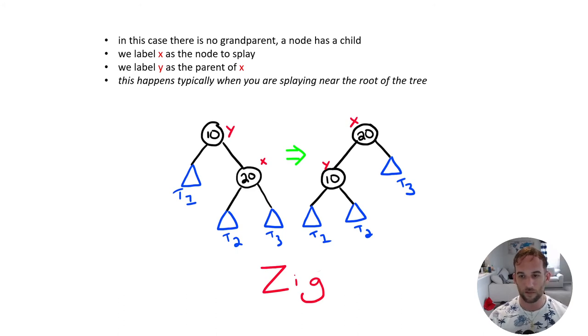So the node with the value 20 is the node we want to perform the splay operation on. So that's labeled x. And then we label its parent y. Well, in this case, it needs to be the root. So we just do one rotation, a left rotation, and then x is the parent. Now these are the three cases that we're going to be using for all splay operations in a splay tree.